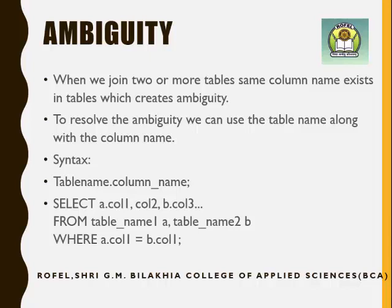The complete syntax for using alias and resolving ambiguity: SELECT a.column1 — meaning column1 from table a — then column2 which is unique so no differentiation needed, then b.column3 meaning column3 specifically from table b. Here a and b are alias names for table1 and table2. The WHERE condition is a.column1 equals b.column1, where column1 is the common column.